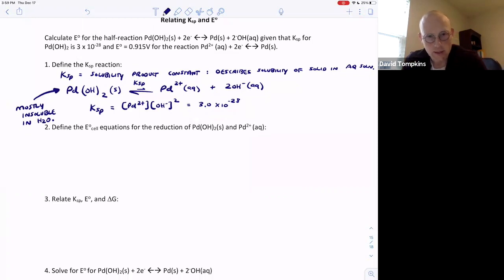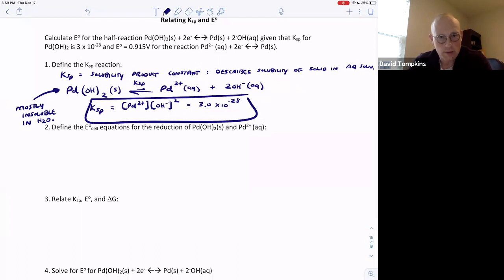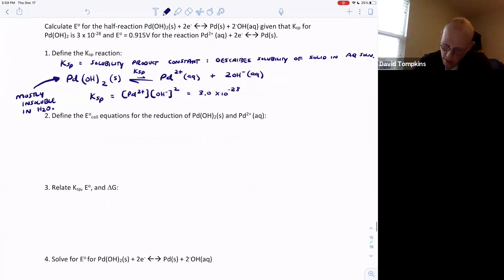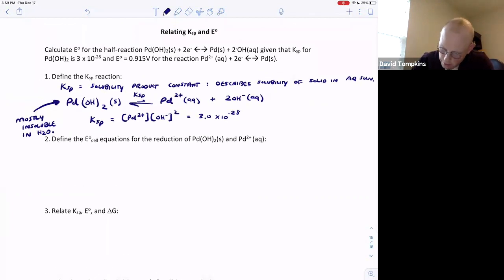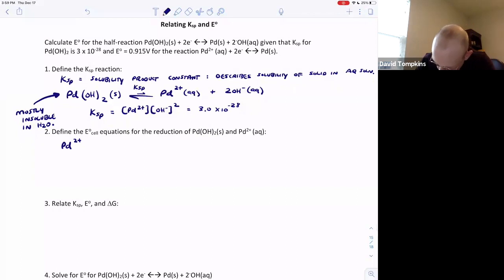So we can relate this process, or the equilibrium constant, to the cell potential. And we want to find the cell potential for the reduction of palladium hydroxide, where it accepts two electrons. So that value is unknown, but we do know one cell potential for palladium, where it's Pd²⁺ becoming Pd⁰. So Pd²⁺, if aqueous, can accept two electrons and be reduced to Pd⁰ in the solid metallic form. And that's said to have a potential of 0.915 volts.